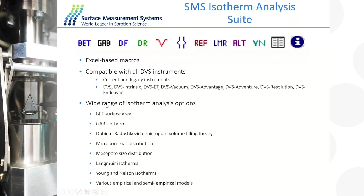The SMS does have an isotherm suite to help analyze data. Once I've collected an isotherm — regardless of what instrument or vapor or gas was used — I can apply a wide range of classic isotherm models from the literature to try to elucidate mechanistic or structural information about the sample. I'm going to very briefly go through some of these models and tell you when and when they cannot be applied.